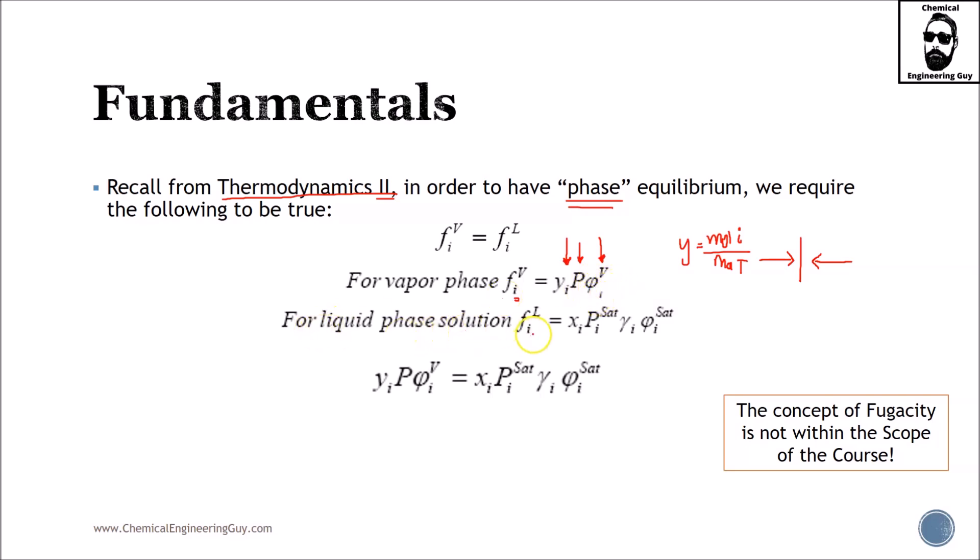For liquid phase solution, it's pretty similar. The fugacity of component I in the liquid phase will be equal to the molar composition of that material, so that will be mol of I divided by the total mol of the liquid phase, this was the gas phase vapor phase, times the pressure of that component, or the saturation point pressure of that component.